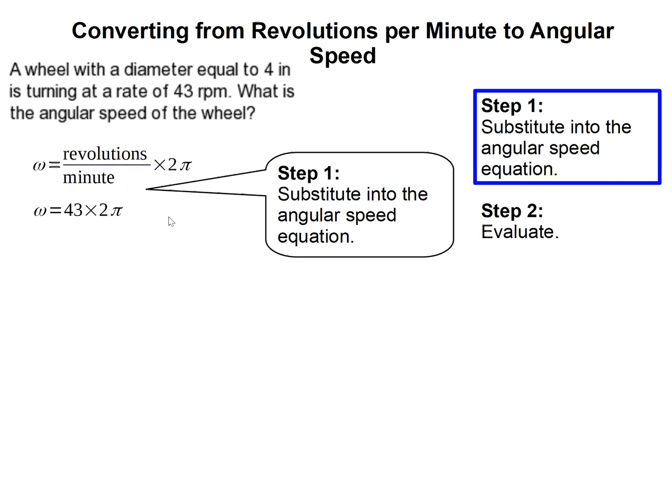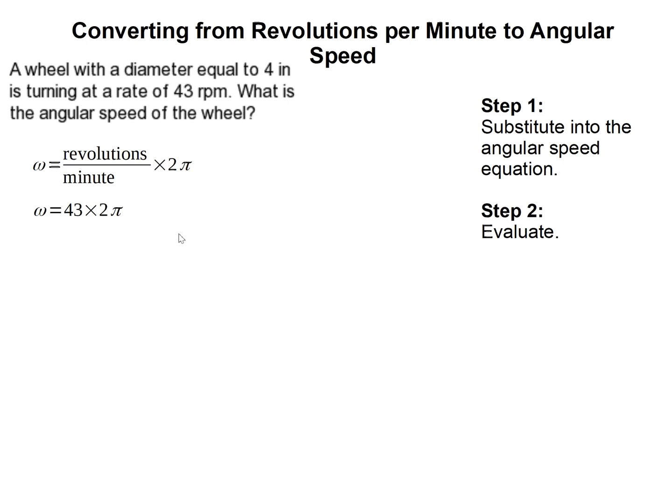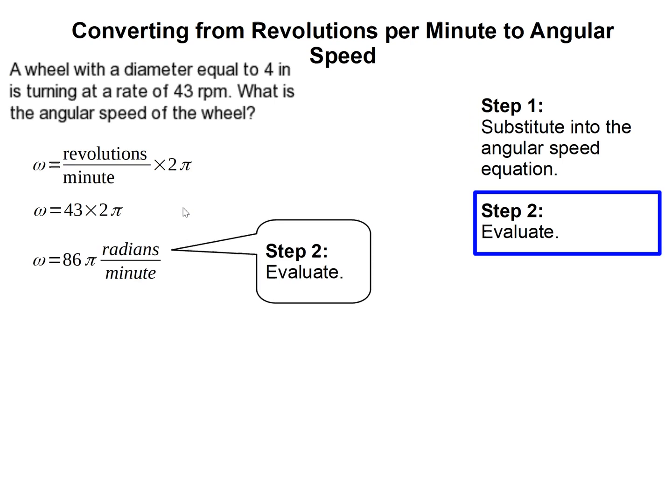I went ahead and substituted 43 revolutions per minute, rpms, right here. Then it's pretty simple. After we substitute, we simply evaluate or simplify. So 43 times 2 is 86, and don't forget your units. So 86π radians per minute. The angle is changing this many radians per minute if it's going that many revolutions per minute. And that's it, that completes our problem.